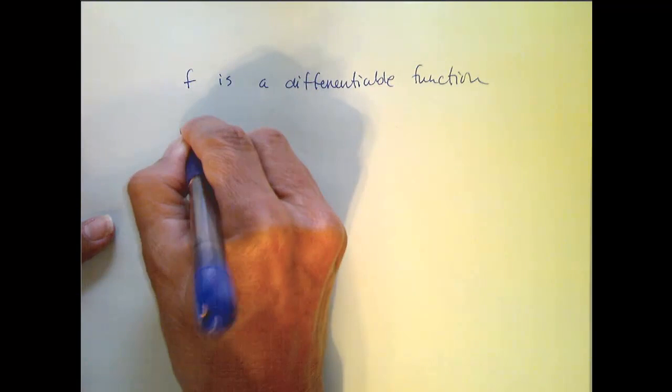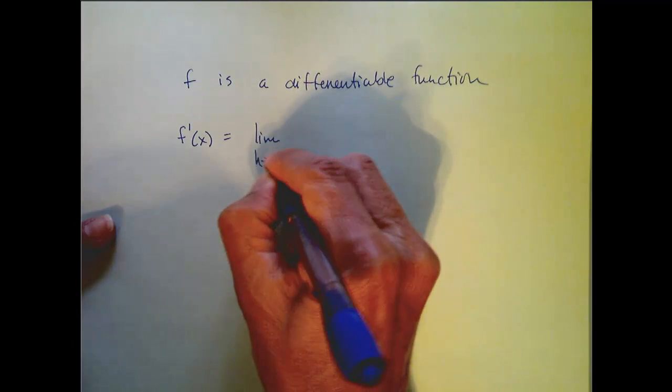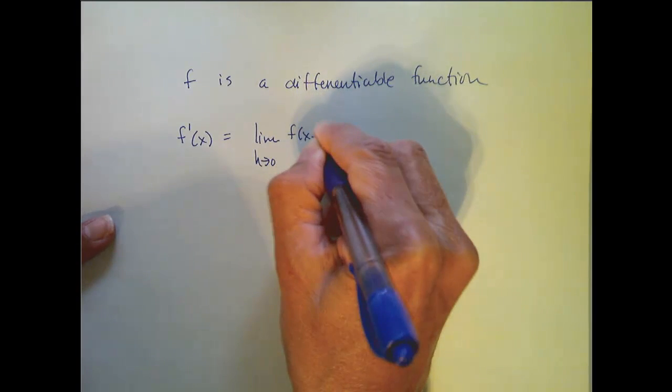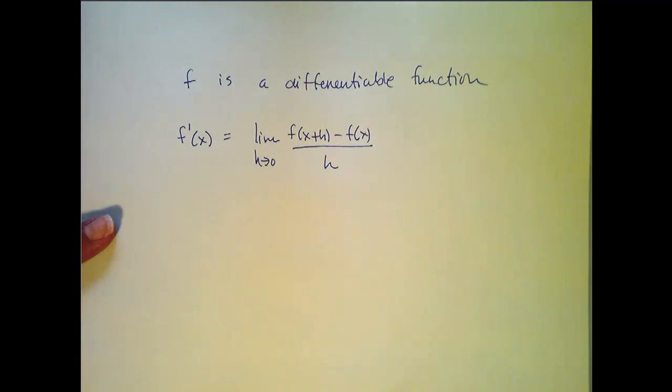And that means f prime of x is the limit as h goes to zero, f of x plus h minus f of x all over h. The question is,